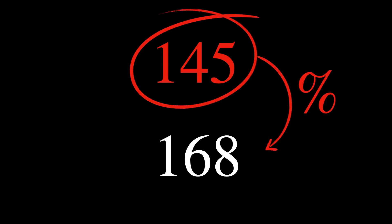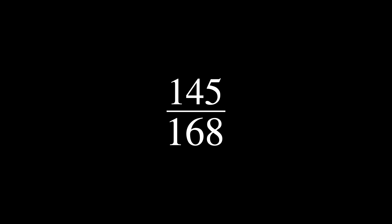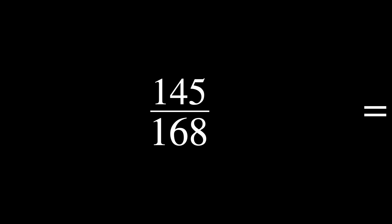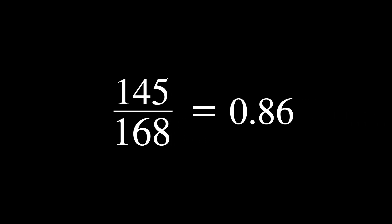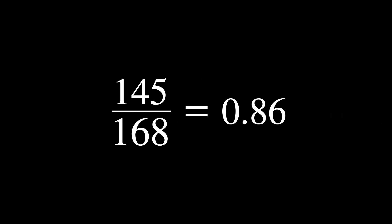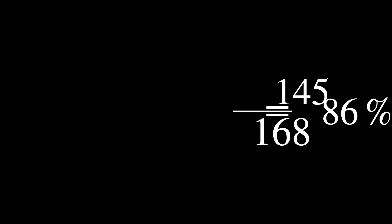The actual number of primes up to 1,000 is actually 168. It is close, but the theorem tells us something about the approximation as a percentage of the true value. Going back to the example, the true value was 168 and the approximation 145. Therefore, the approximation has a proportion of 0.86, or 86%.